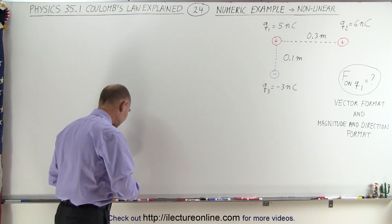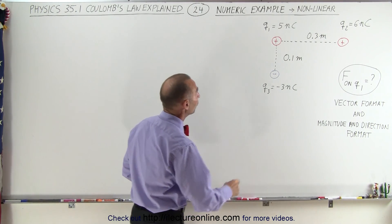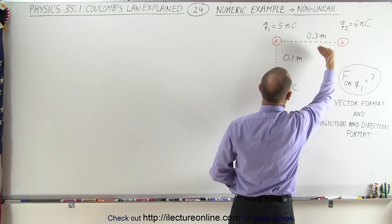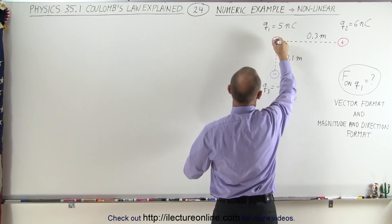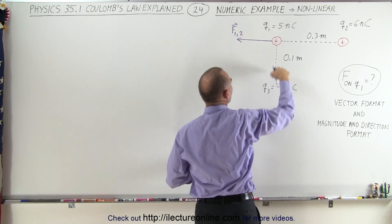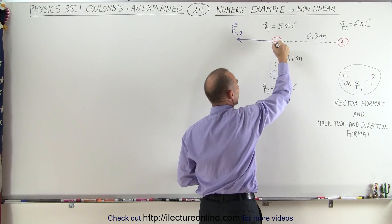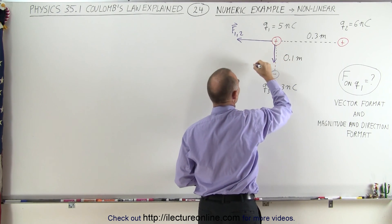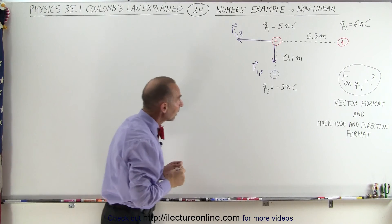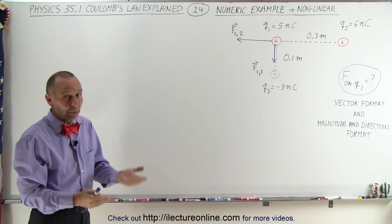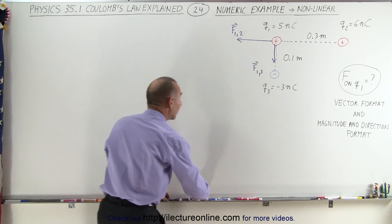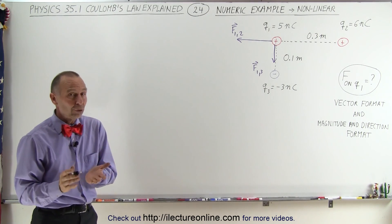To start out, you want to draw the vectors on the board. The force on Q1 due to the presence of Q2 is going to be force repulsion, so the force will be to the left — that's F between 1 and 2. The force between 1 and 3 is going to be force attraction, so the force will be downward — that's F between 1 and 3. Luckily, there are no forces at an angle, which would require subdividing into X and Y components. What we do need to do is find the magnitude of those two forces.